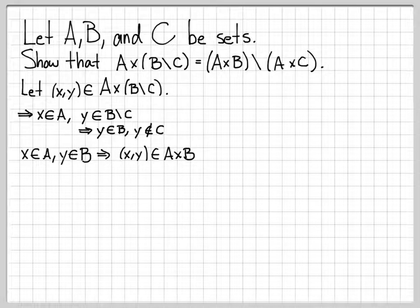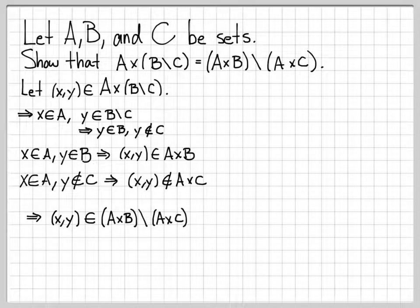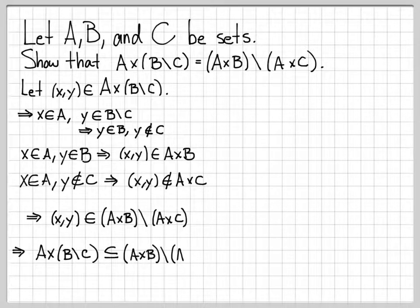So the coordinate (x, y) is an element of the set A Cartesian product with B. Also, since we know that x is in A and y is not in C, then we know that the pair (x, y) cannot be an element of A Cartesian product C. If it was an element of A cross C, we would need x in A and y in C. But since y is not in C, (x, y) cannot be an element of A cross C. So we've established that (x, y) is in A cross B and (x, y) is not in A cross C — that's exactly the definition of being an element of the set A cross B differenced with A cross C. So we've established that the first set is a subset of the second set.